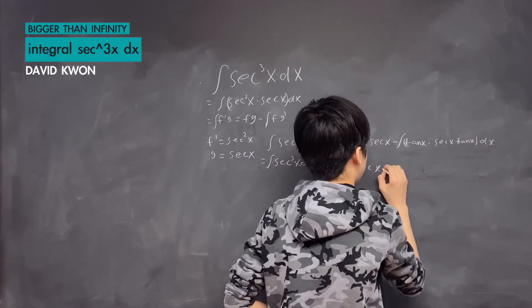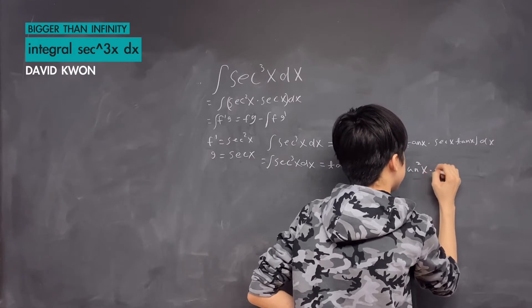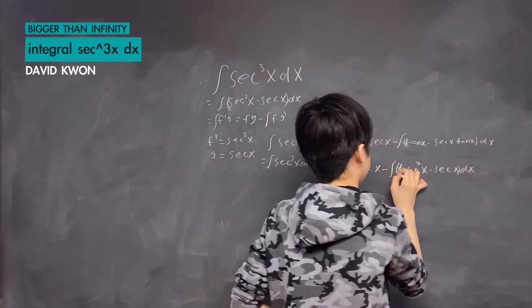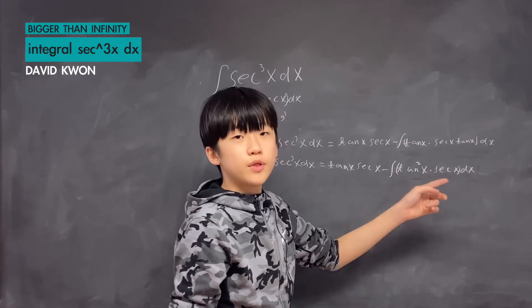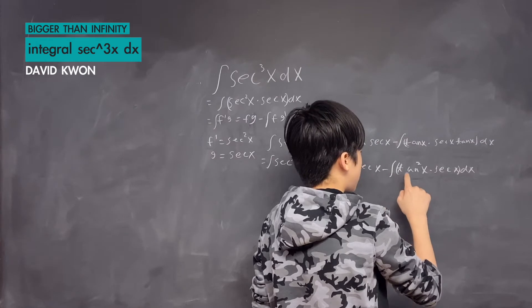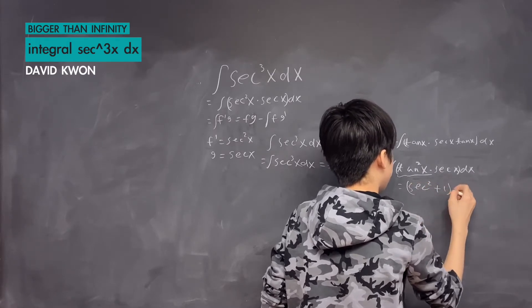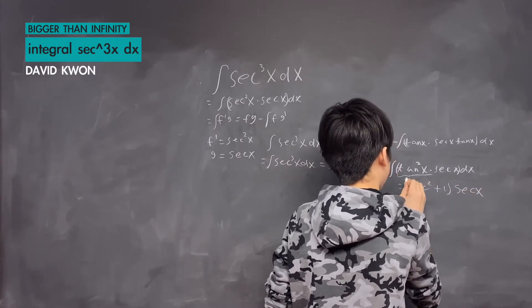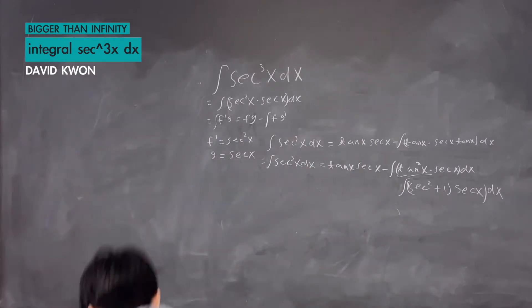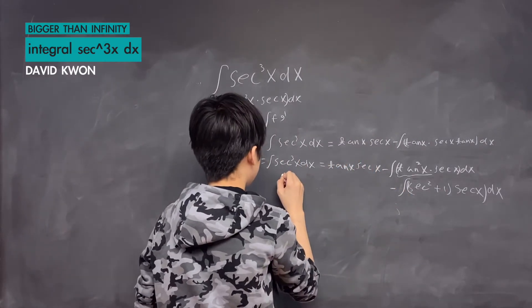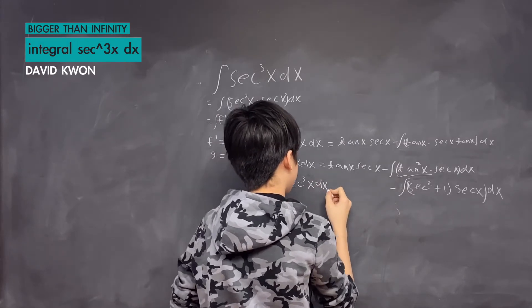If we simplify further, we have the integral of tangent squared x times secant x dx. We can go further using the Pythagorean identity: tangent squared x is equal to secant squared x minus one. So we have that times secant x, times dx.